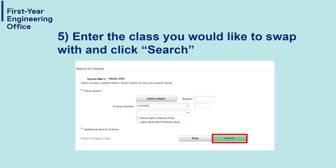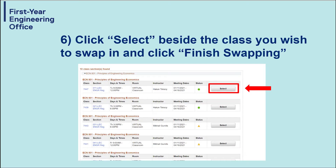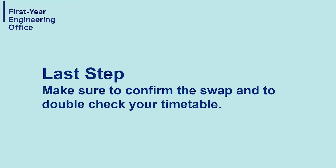Step 5: Enter the class you would like to swap with and click Search. Step 6: Click Select beside the class you wish to swap in and click Finish Swapping. Last step: Make sure to confirm the swap and to double check your timetable.